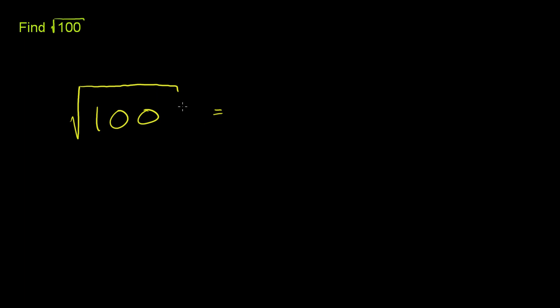So this is equal to, and let me write it this way. Normally you could skip this step, but you could write this as the square root of, and instead of 100, 100 is the same thing as 10 times 10. And then you know, the square root of something times itself, that's just going to be that something. This is just equal to 10.